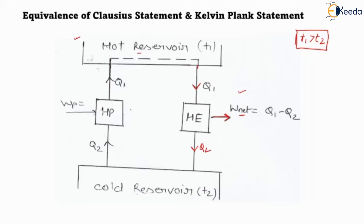For the heat pump, heat transfers from the cold reservoir to the hot reservoir. Q2 is transferred to the heat pump and we have to do some work to transfer a higher amount of heat Q1 to the hot reservoir. Since Q1 is greater than Q2, if we want to transfer heat from lower temperature to higher temperature we have to do some work on the system.